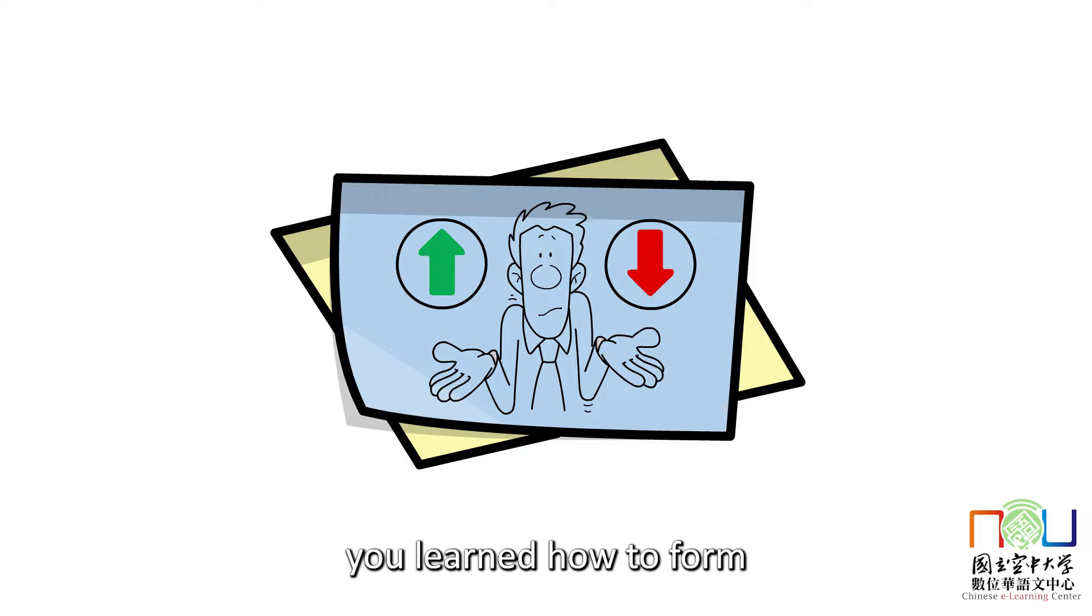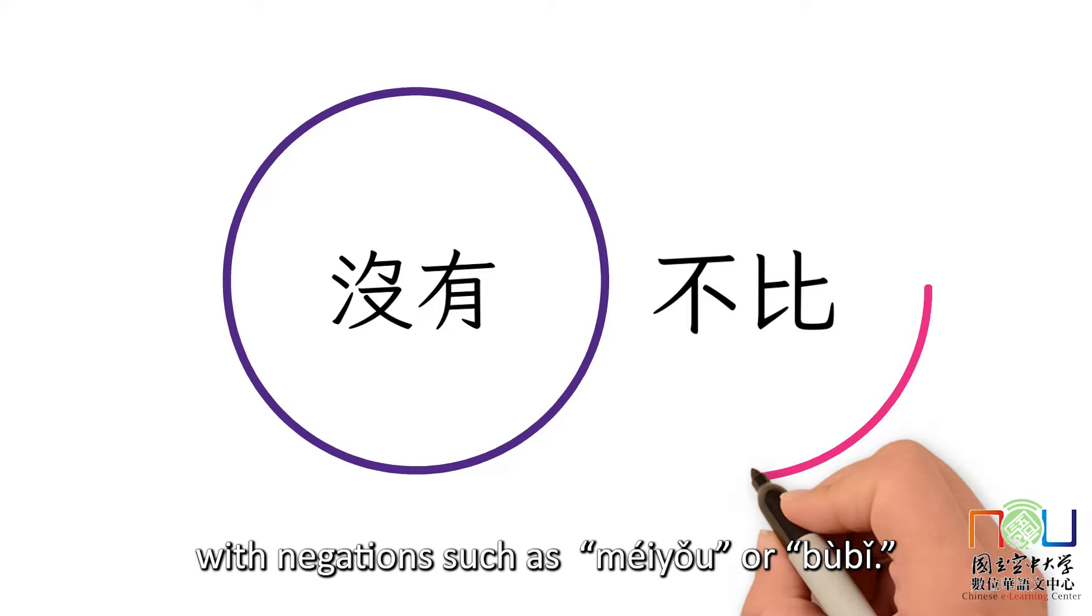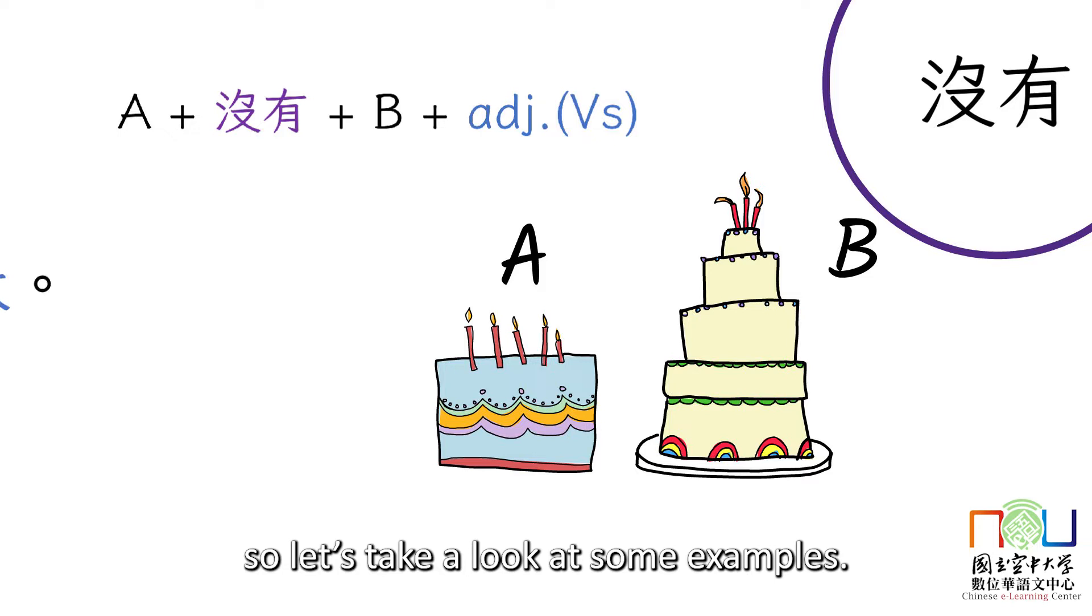We're going to talk about the negative form of comparative sentences today. In the previous lesson, you learned how to form a comparative sentence using 比. It's also important to know how to compare things with negations such as 没有 or 不比. The usages of these two are different. So let's take a look at some examples.